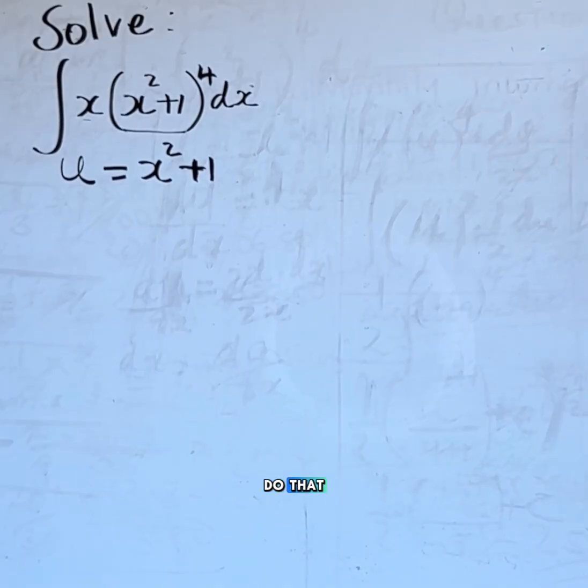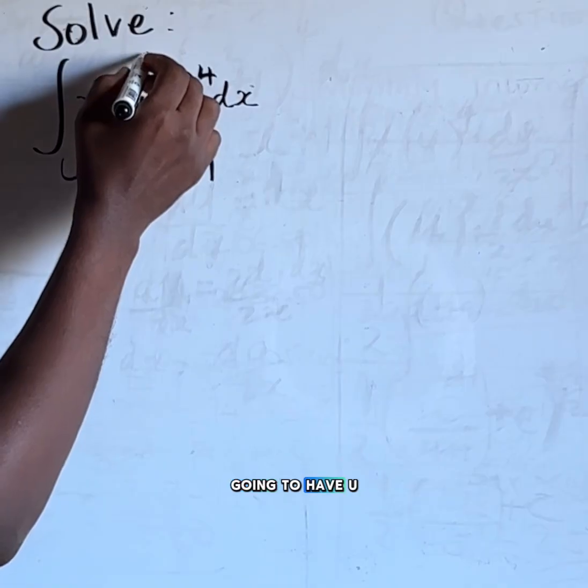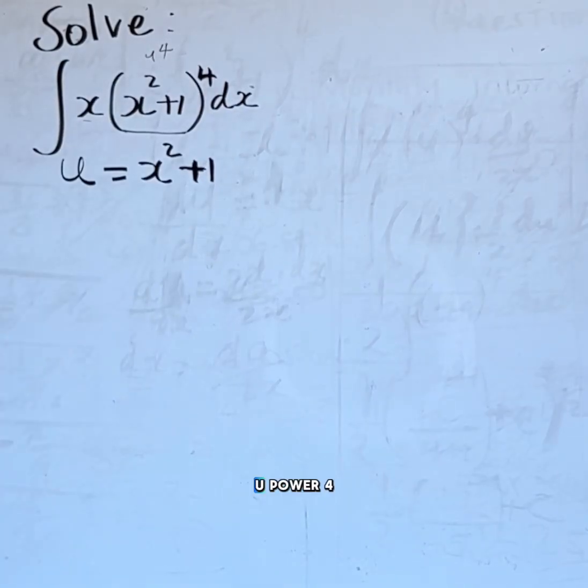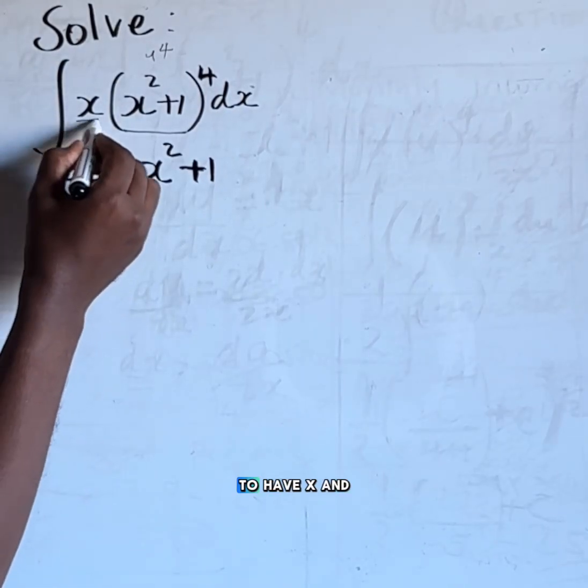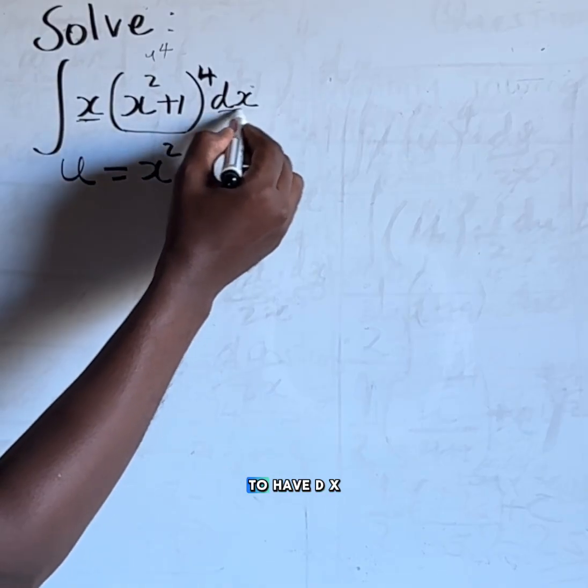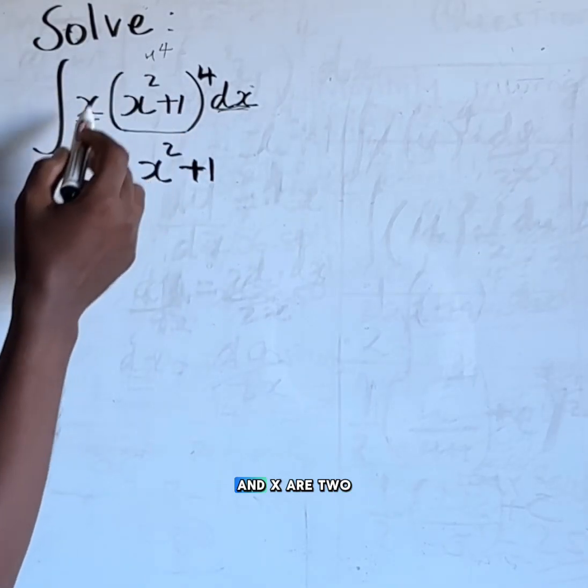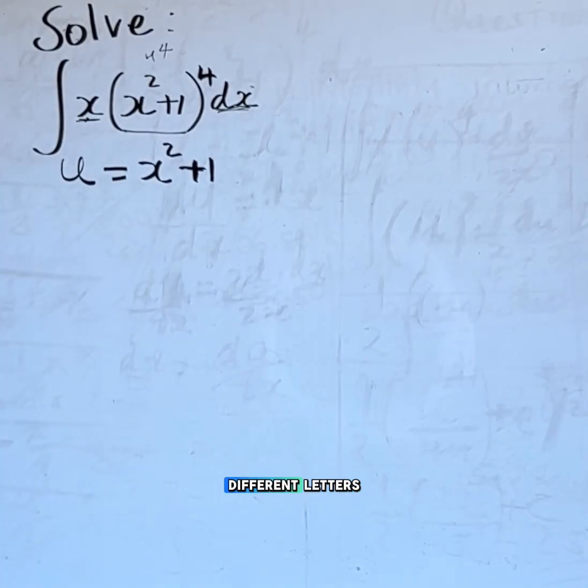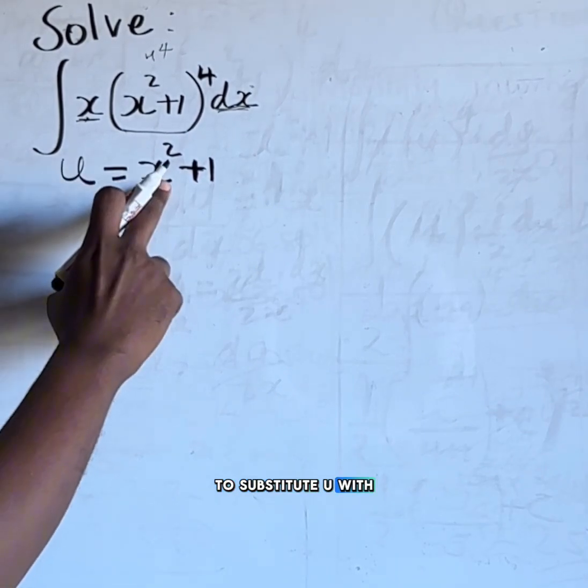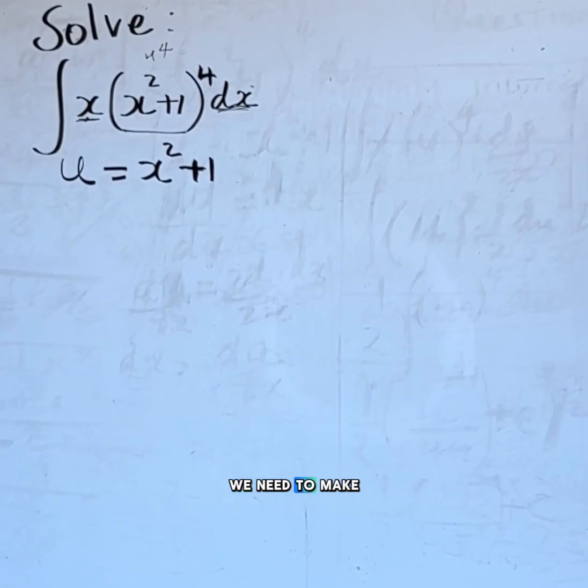So we remove x squared plus 1 and replace with u. The moment we do that we're going to have u to the power of 4, here we have x, and here we have dx. Which means that u and x are two different letters, they are unlike terms. So if we are to substitute u with x squared plus 1 we need to make everything u.